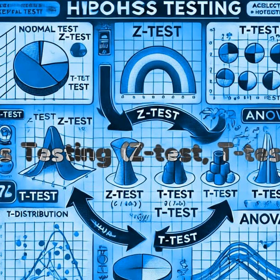A test statistic is a standardized value calculated from sample data that helps make a decision about the null hypothesis. Common test statistics include the z-statistic, t-statistic, and F-statistic. Once calculated, we compare it against a theoretical distribution to determine the p-value or identify whether the test statistic falls within a critical region. A small p-value, typically less than the significance level, indicates strong evidence against the null hypothesis. A large p-value suggests the observed data is consistent with the null hypothesis.